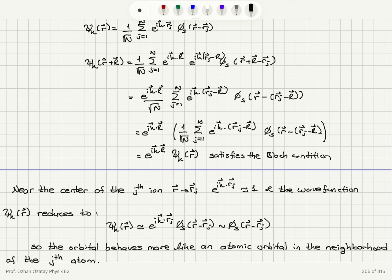Now near the center of the jth ion when r is close to rj e to the i k dot rj is going to become 1